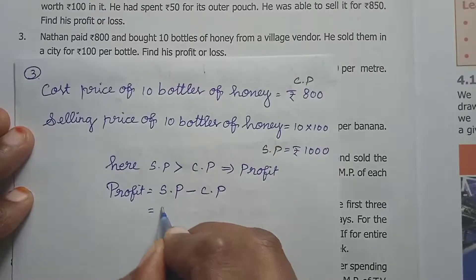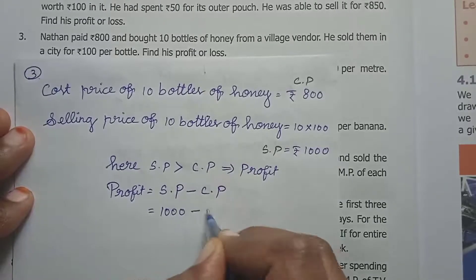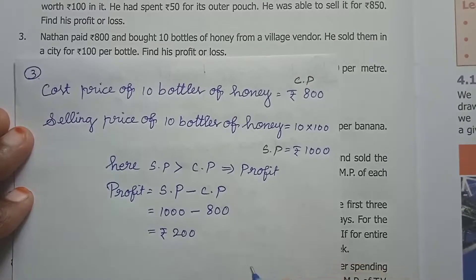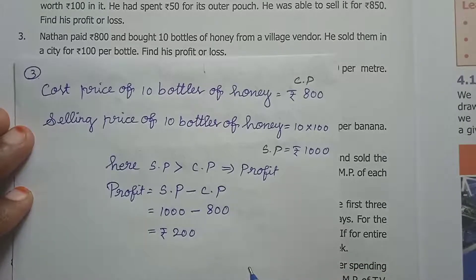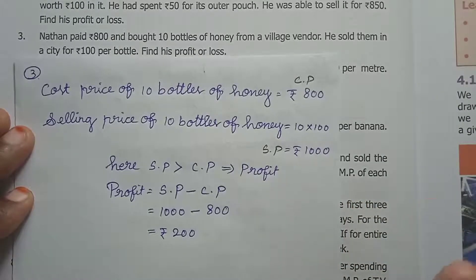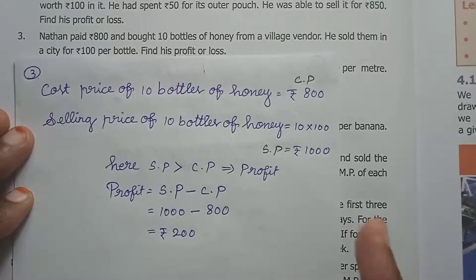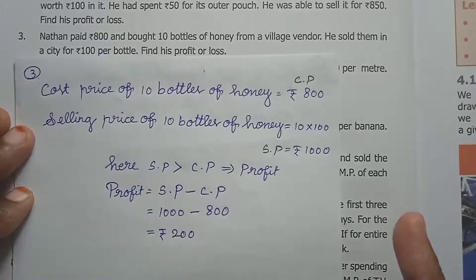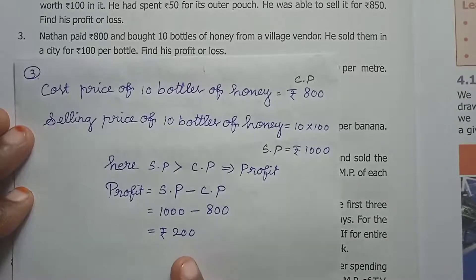SP value is 1000, CP value is 800. So we subtract: 1000 minus 800 equals 200 rupees. Nathan bought 10 bottles of honey from the village vendor and sold each bottle for 100 rupees in the city. Therefore, his profit is 200 rupees.